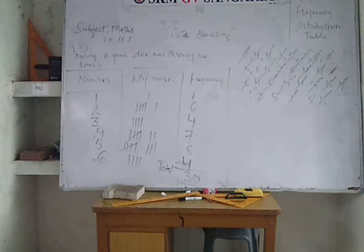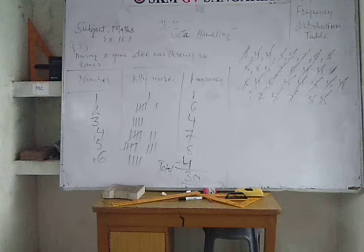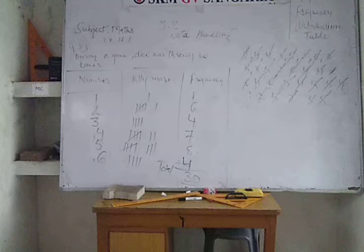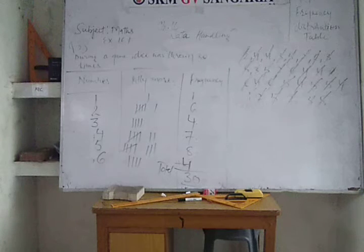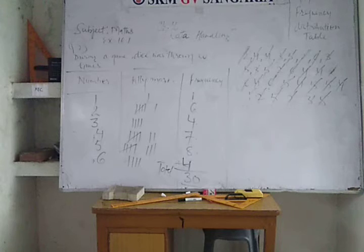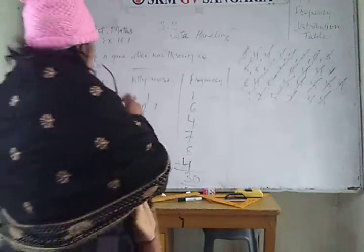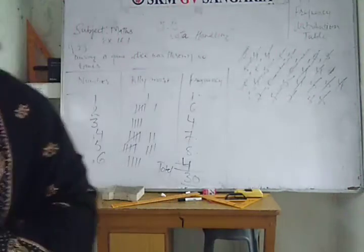Which outcome occurs the maximum number of times? Here, 5 is occurring — the frequency of 5 is 8, so 5 occurs the maximum number of times. Which outcomes occur an equal number of times? That is 3 and 6 — 3 is 4 times and 6 is also 4 times. How many times did number 6 appear? 6 appeared 4 times as the outcome. What is the difference between the maximum and minimum? Maximum is 8 and minimum is 1, so the difference is 7.